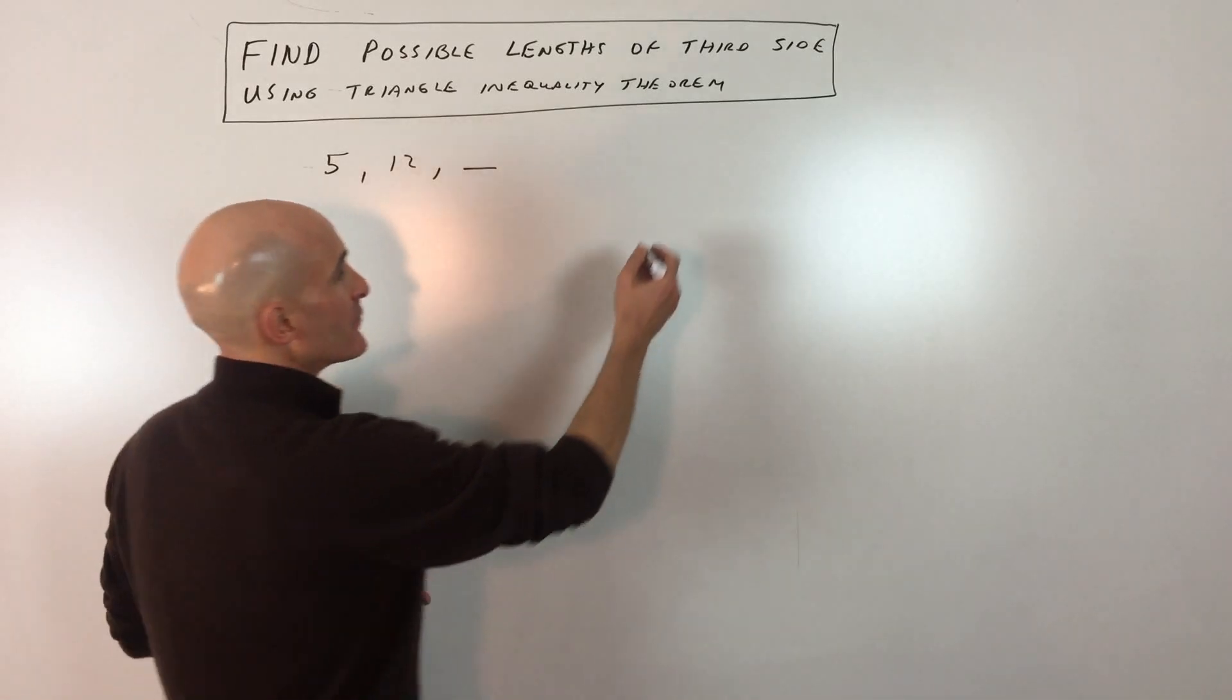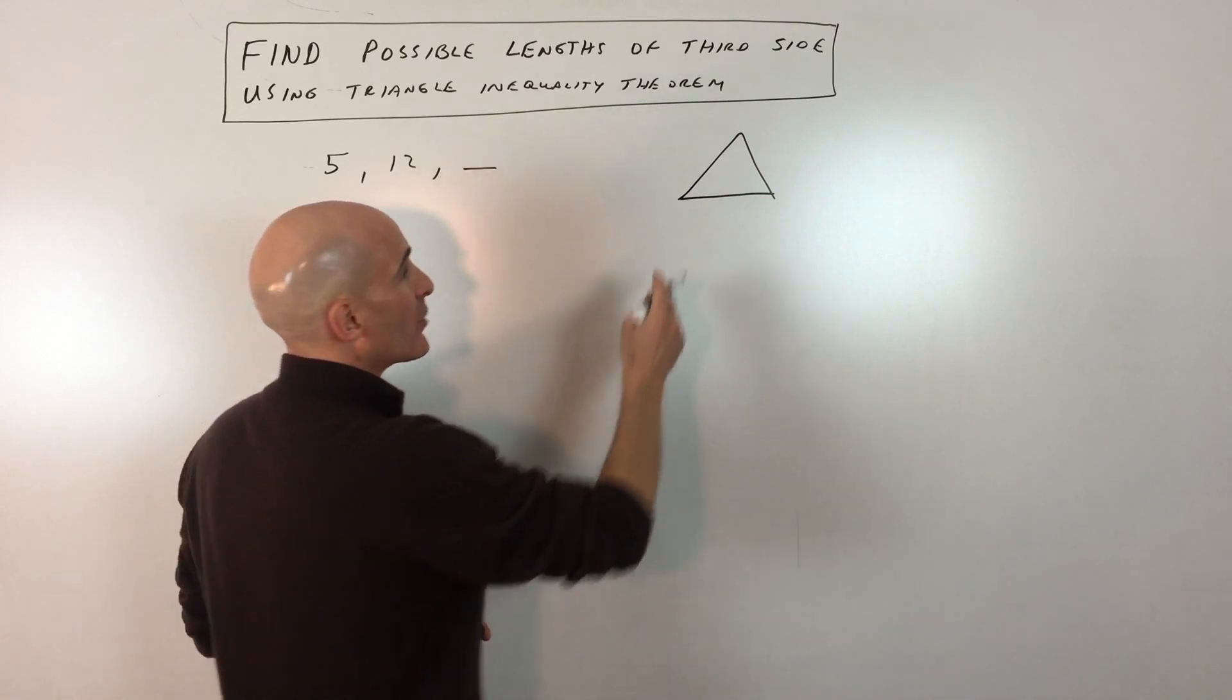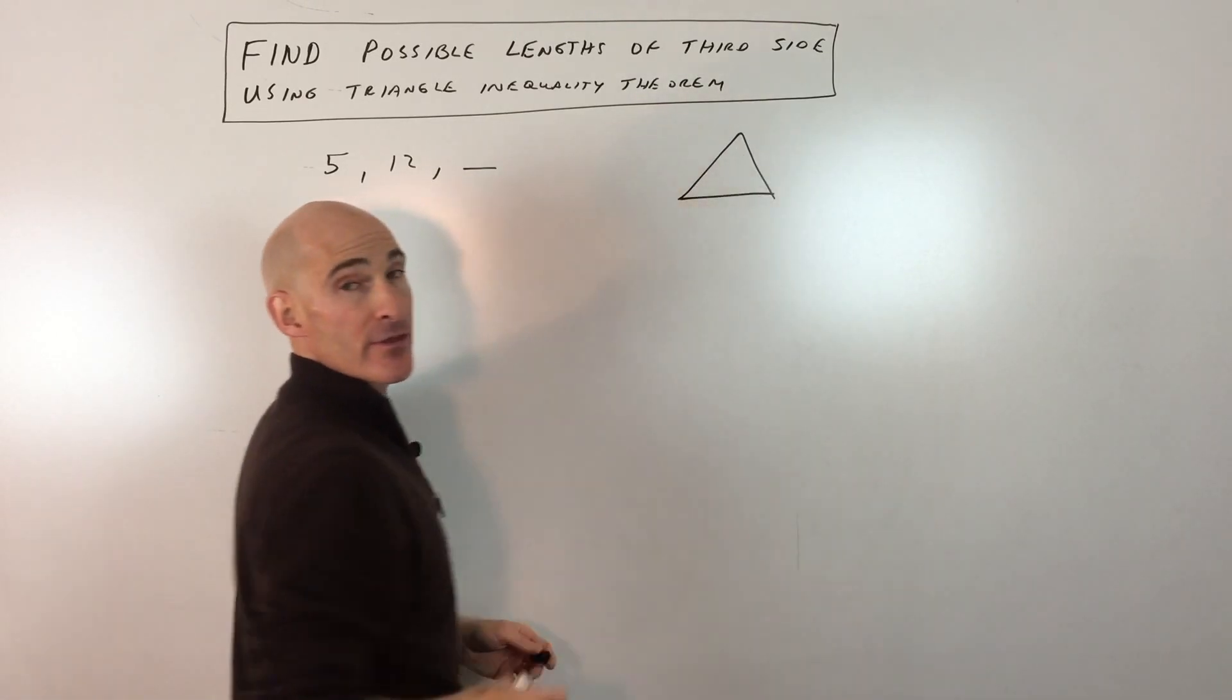What the triangle inequality theorem tells us is that if you have three sides that make up the size of a triangle, if you add any two sides together, they have to add up to more than the third side.